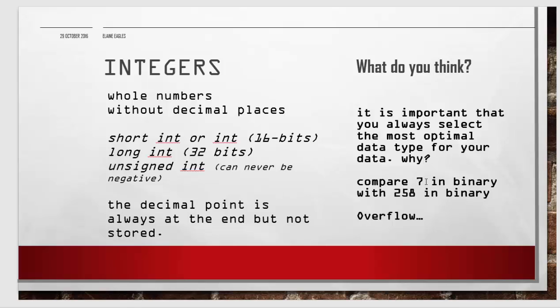7 in binary is just 3 bits, whereas 258 uses 9 bits. 256 uses 8 bits, so you need the ninth bit. The decimal point is always at the end, so it's not really there at all with a whole number integer.